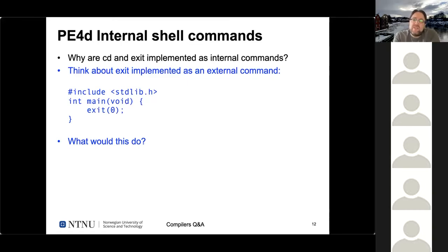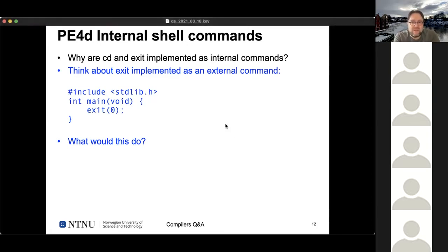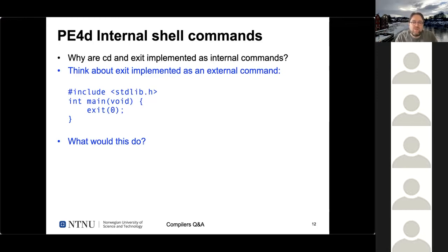Why is exit implemented as an internal command? For cd it's clear — cd changes the directory of the current process; if we forked a child process for this, the child would change directory but the parent shell wouldn't know about it. For exit, if you implemented it as an external command, calling exit in main would exit the child process, not your shell. Exit should exit the current shell. So implementing internal commands means: when you parse a command line, first check if it's an internal command like cd or exit; if not, then fork and exec.